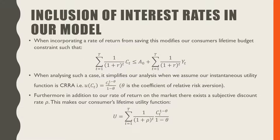When incorporating a rate of return from savings, this modifies our consumer's lifetime budget constraint such that our lifetime consumption is now discounted by 1 plus R, and that must be less than or equal to our initial endowment plus our lifetime discounted utility flows, where our discount factor is 1 over 1 plus R raised to the power of T.